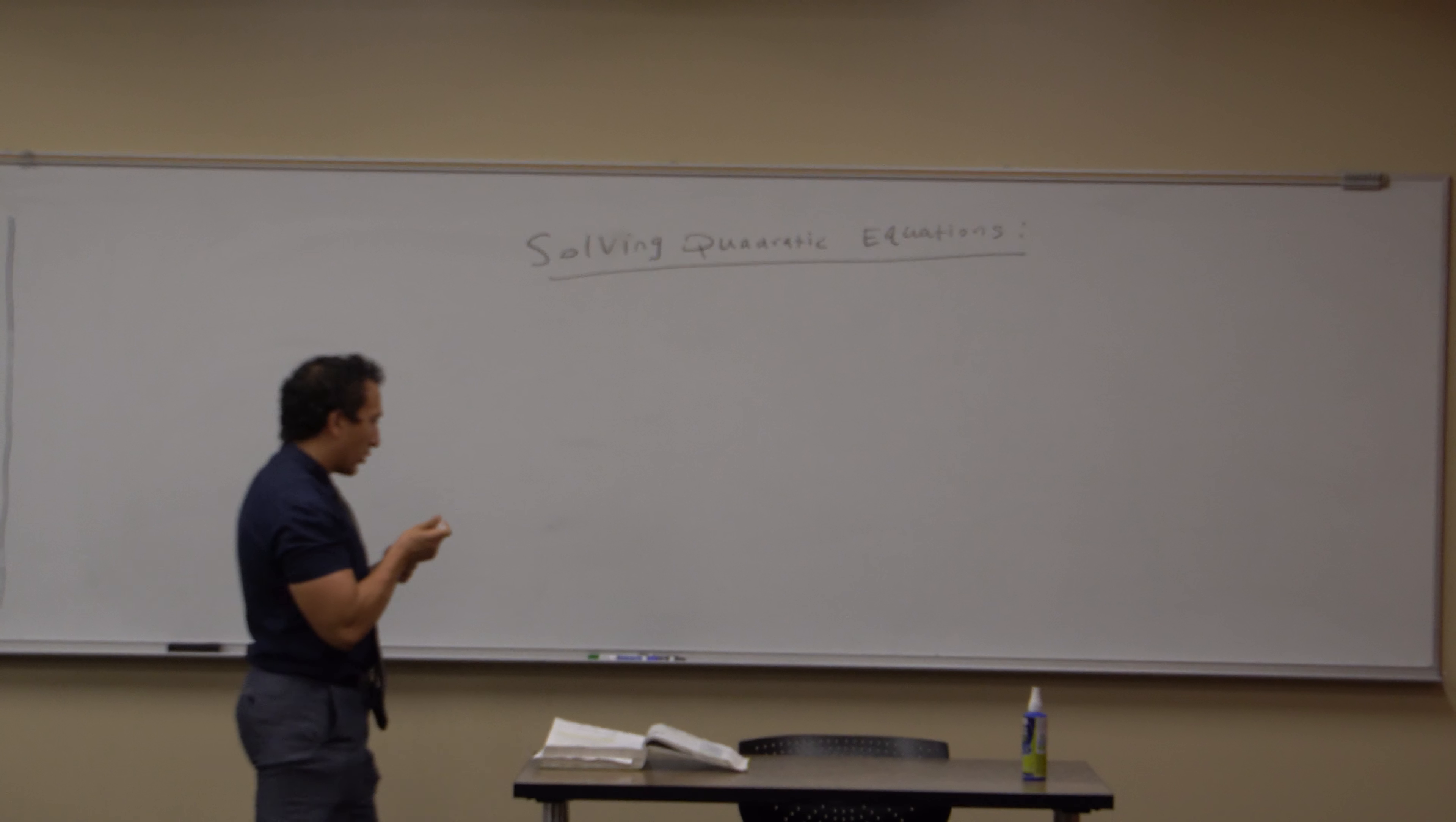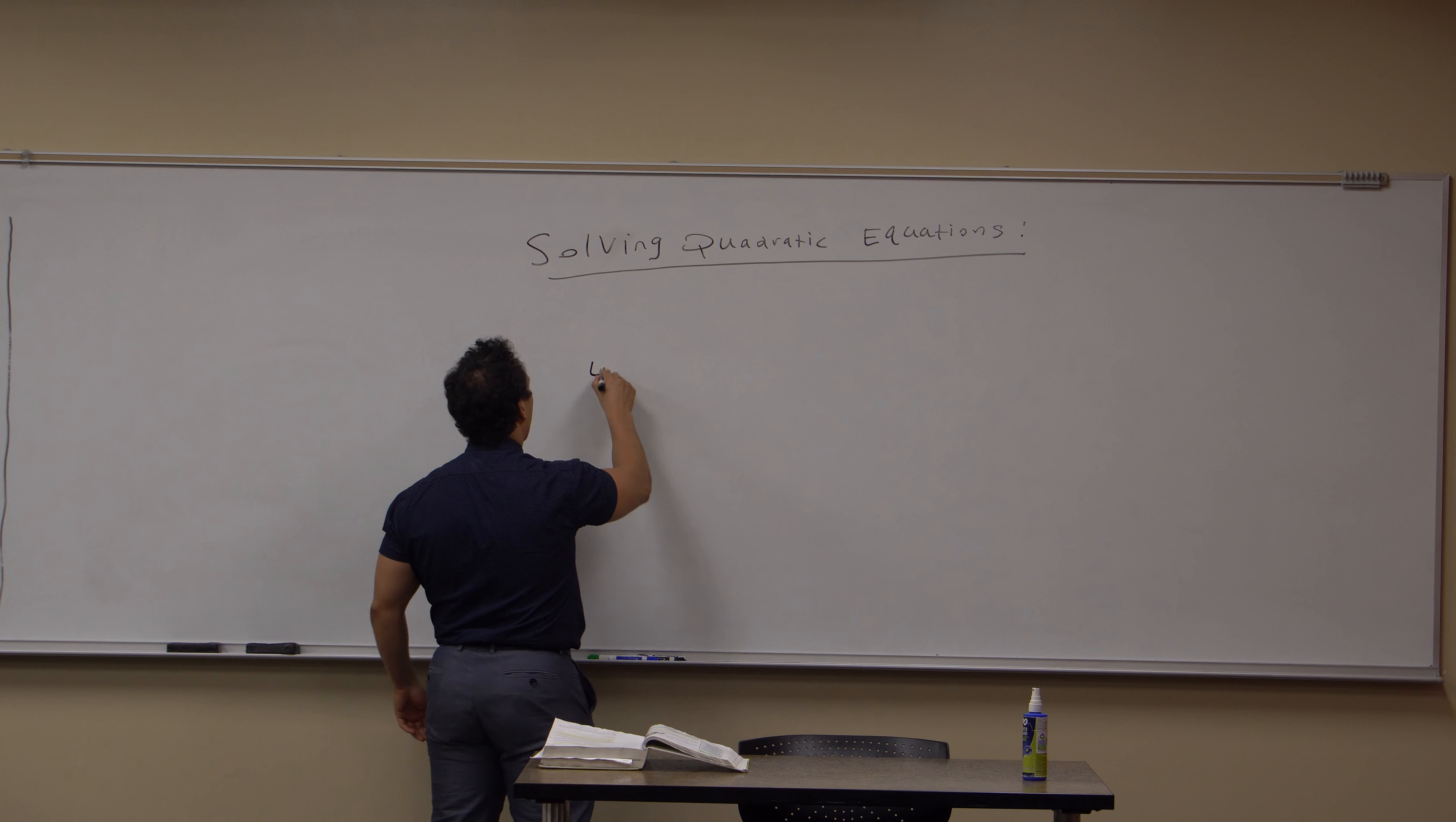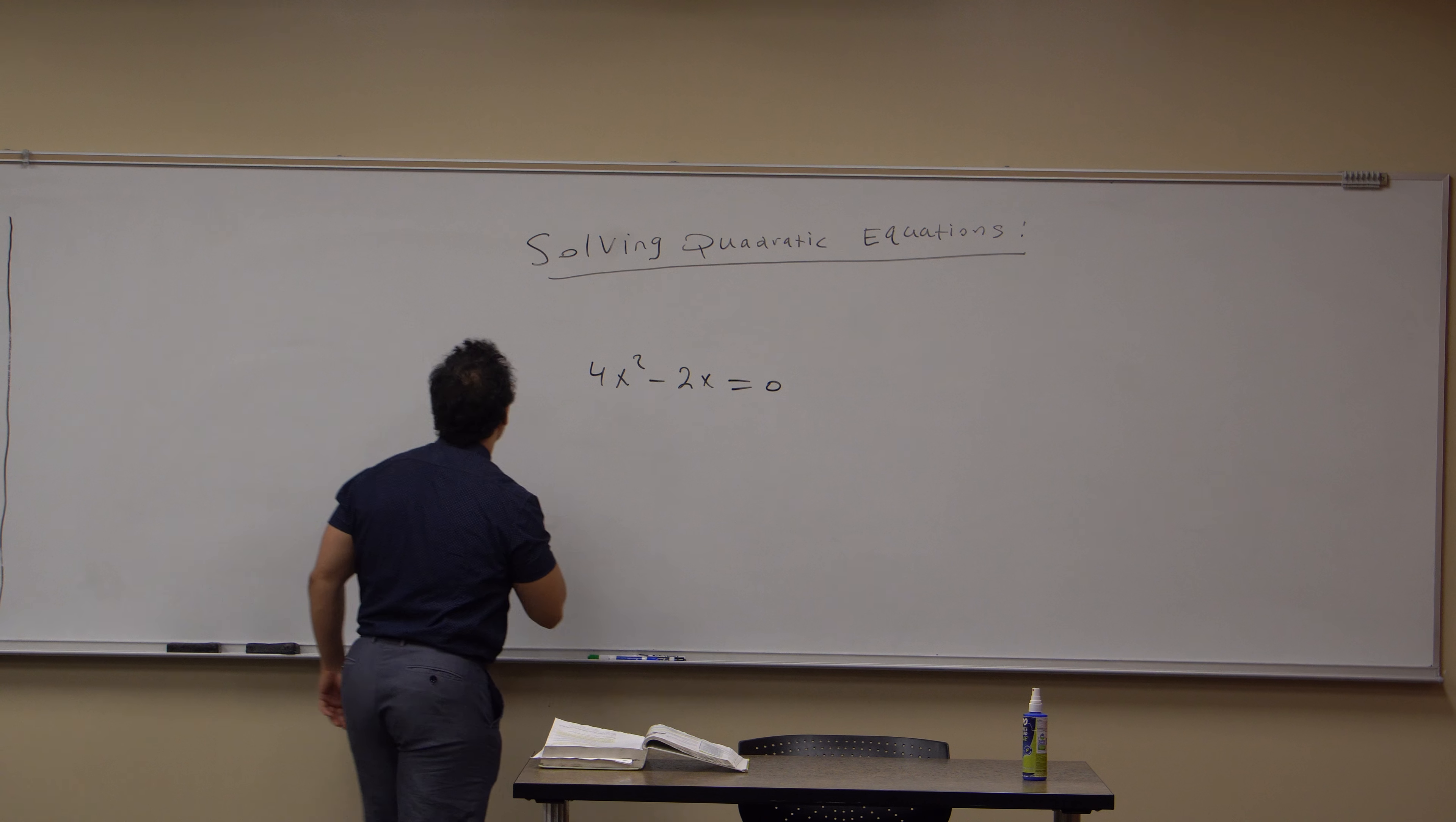First, we're going to be doing various methods. I'll use this example for 4x² - 2x = 0. We want to solve for x.